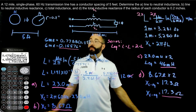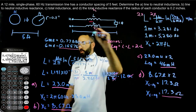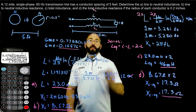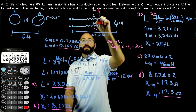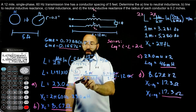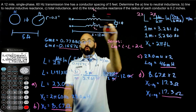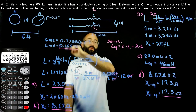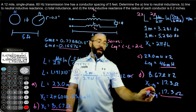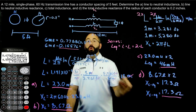That's it for single-phase transmission lines: solving for the line-to-neutral inductance, the line-to-neutral reactance by converting inductance from Henry's to ohms, and then the total round-trip single-phase inductance and inductive reactance by multiplying both values by 2, since inductors and inductive reactance both sum in series.